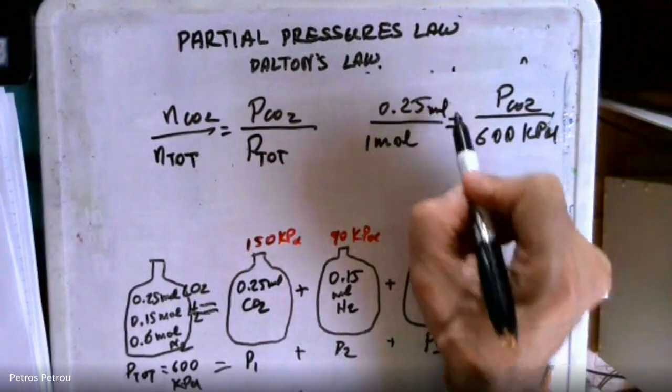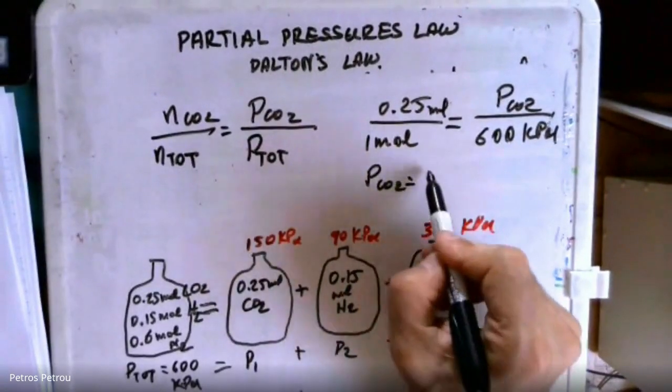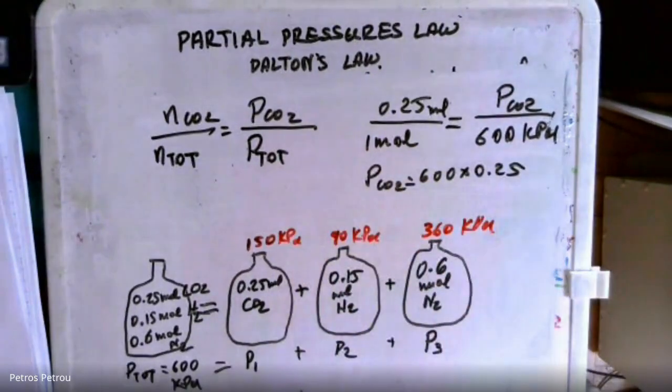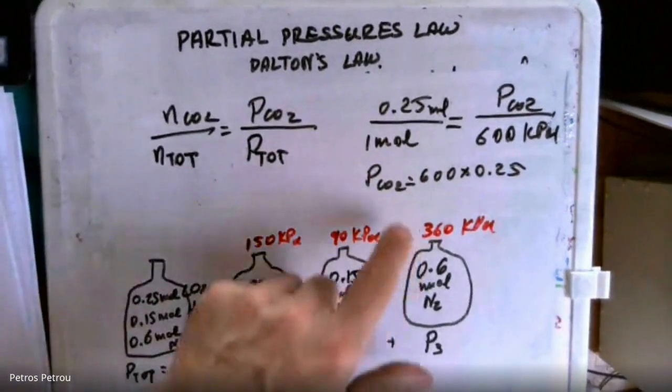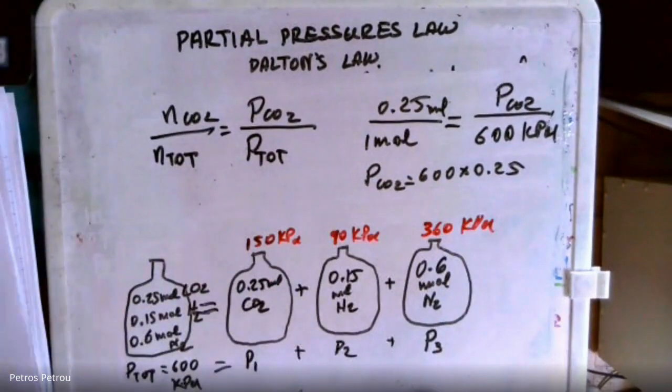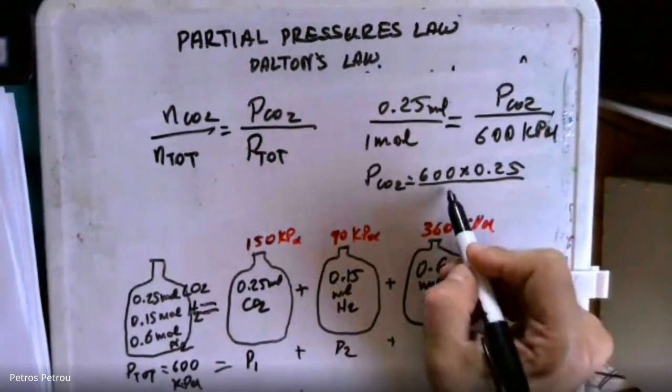What you get is the pressure of the CO2 in this case is going to be 600 times 0.25. In other words, it will be the number of moles times the total pressure divided by the total number of moles. Divided by the one mole.